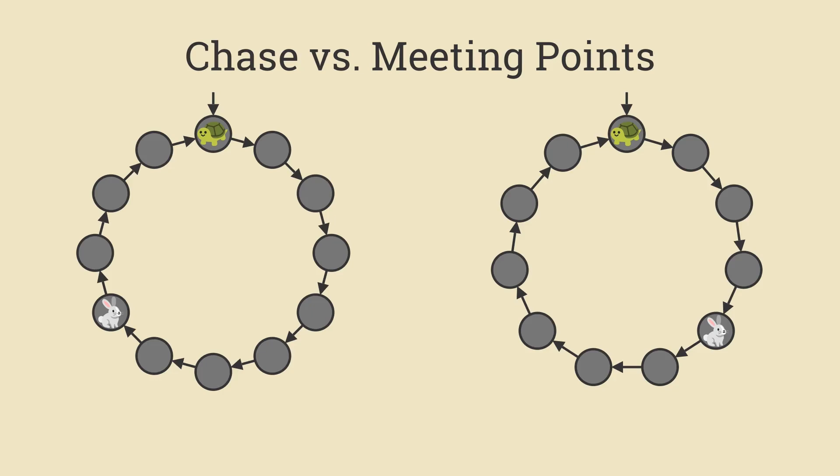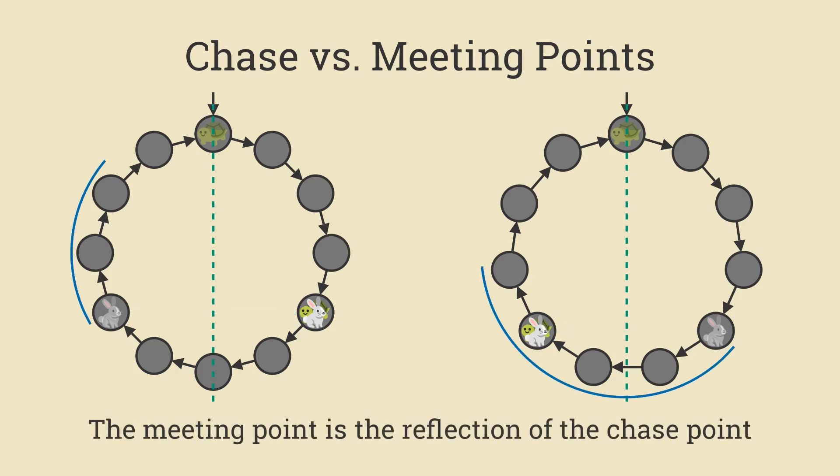The first thing we'll do is establish a relationship between what I call the chase point, where the rabbit is standing when the turtle first makes it to the cycle, versus the meeting points. I'm just going to run two examples, and maybe you can try to guess what the pattern is. So in this case, the rabbit is sort of on the left, and you let the algorithm run, and they meet up on the right. In the second example, the rabbit is on the right, it takes a little bit longer, but eventually they meet up on the left. Do you have a guess as to the pattern? If you draw a line of symmetry like this, the meeting point is the chase point reflected across this line of symmetry. To prove this, consider the following two arcs. The turtle traverses one of those arcs, and the rabbit, who's moving twice as fast, traverses both of them. Therefore, these two arcs must be of the same length, proving the claim.